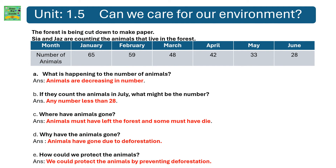Unit 1.5 Can we take care of our environment? The forest is being cut down to make paper. Sia and Jazz are counting the animals that live in the forest. Month and number of animals: January — 65, February — 59, March — 48, April — 42, May — 33, June — 28.